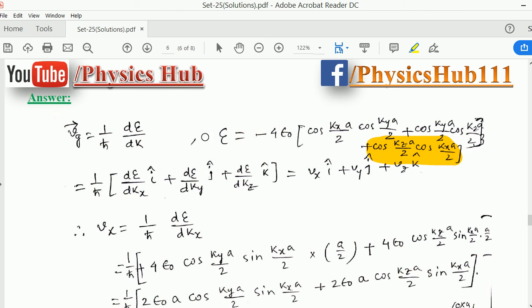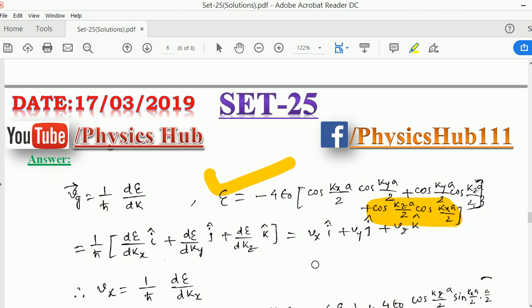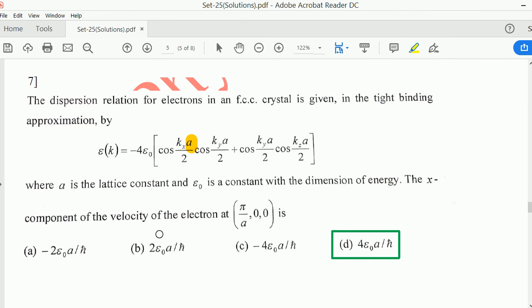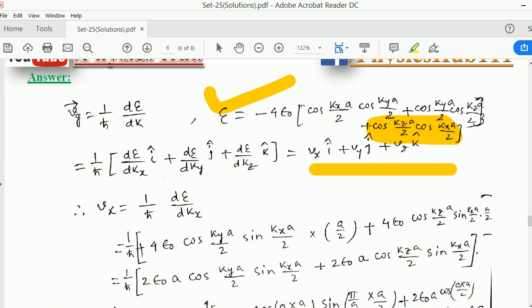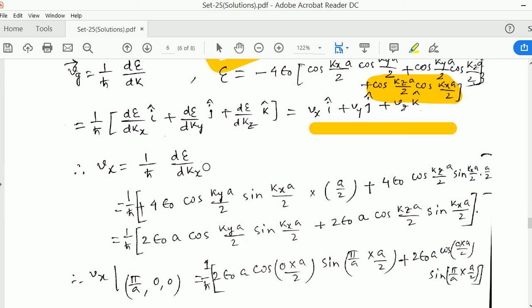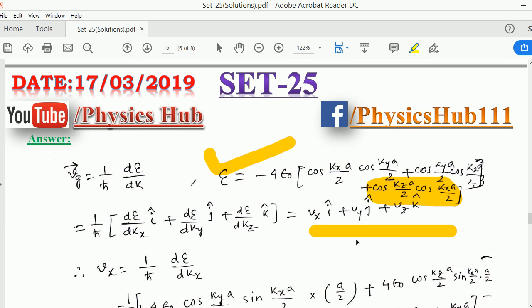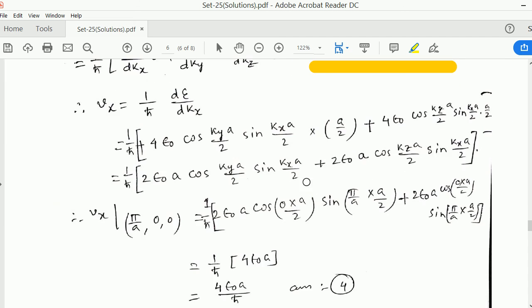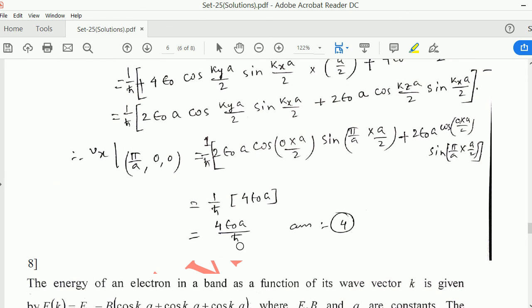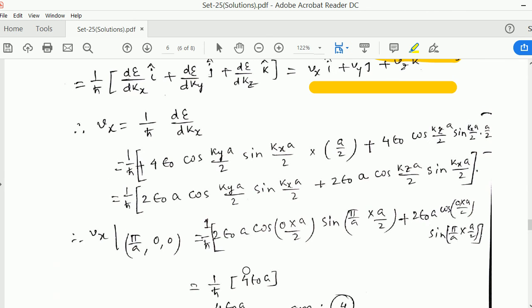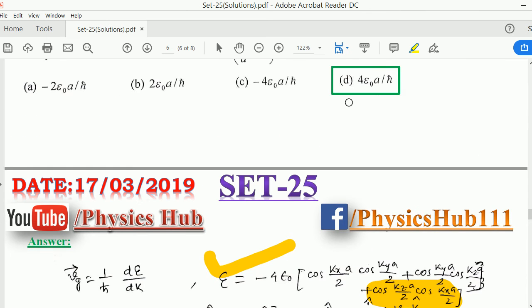So 1 over h-bar times (d epsilon by dkx i-hat plus d epsilon by dky j-hat plus d epsilon by dkz k-hat). We have to calculate the x component of the velocity, so we're just taking the derivative with respect to kx. Upon taking the derivative and putting the values of kx, ky, kz, we get it equals to 4 epsilon naught a over h-bar. It is matching with option D, so option D is the correct option.